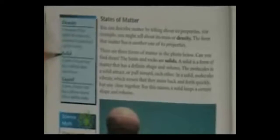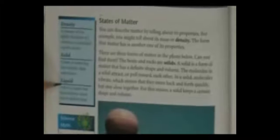Page 38. States of matter. On this page, we'll be talking about density, solid, liquid. Let's go to the text. States of matter. You can describe matter by telling about its properties. For example, you might tell about its mass or density. The form that matter has is another one of its properties. There are three forms of matter in the photo below.